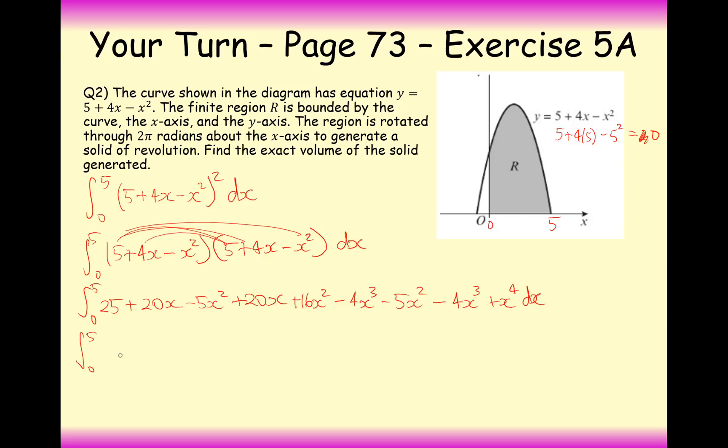OK, so let's tidy this up a little bit now. 25, and let's look at the x's: 20, 40, that's all we need, 40x. X² minus 5 plus 16, that's 11x² minus another 5, so that would be plus 6x². Let's look at the x³ now: minus 4 minus 4, so that's minus 8. And then we've got a single x⁴ at the end. OK, so we're now in a position where we can now integrate. Whoops, we've all forgotten that we need to times by π at the front of all of this stuff here. I do apologise. Right, so let's now integrate.